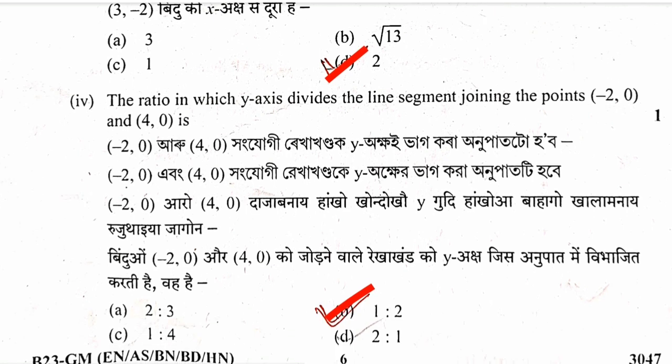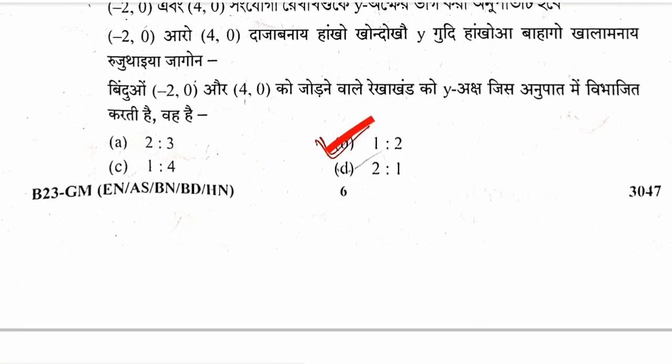Question 5: The ratio in which the y-axis divides the line segment joining the points (minus 2, 0) and (4, 0). The ratio is 2 to 4, which simplifies to 1 to 2. Option B is correct.